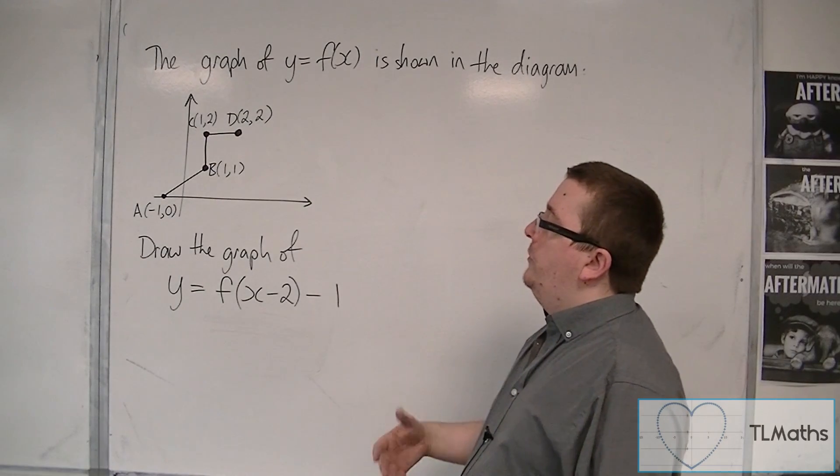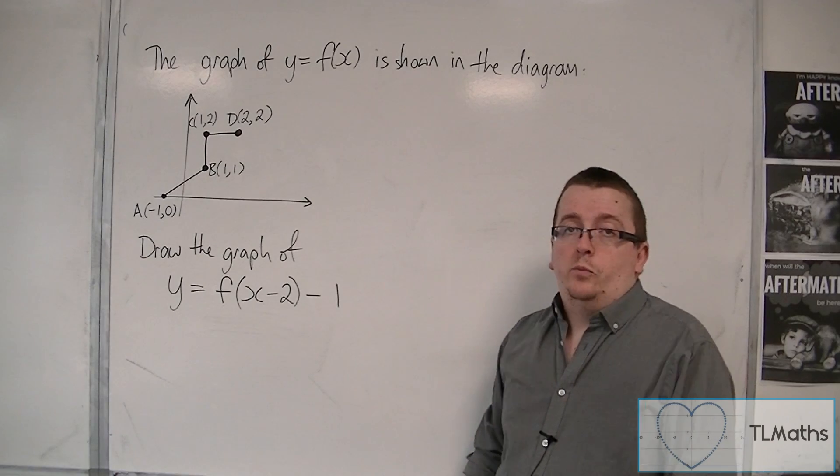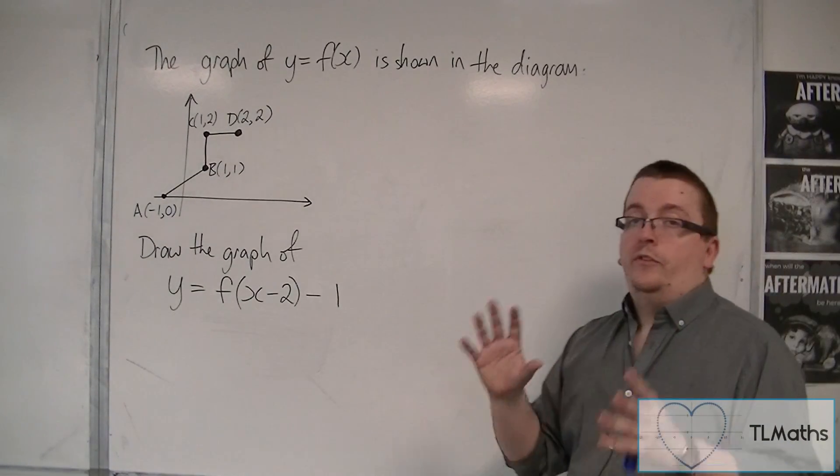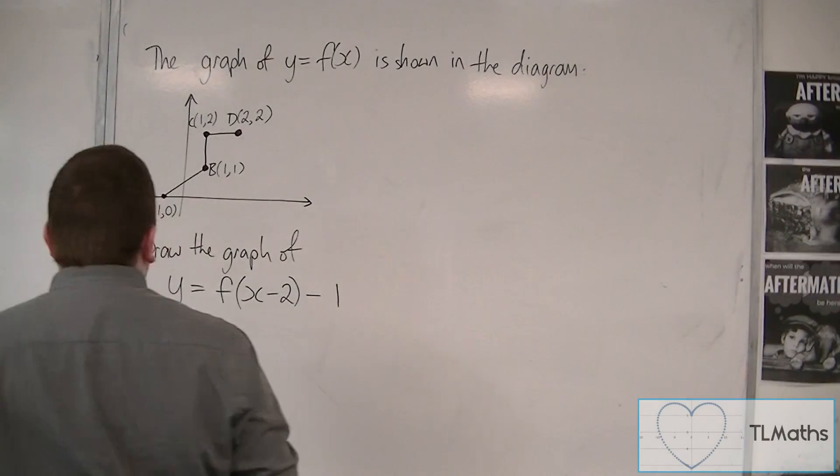And what we want to do is draw the graph of y is equal to f of x minus 2 minus 1. And we want to make sure that we're labelling the points correctly. OK, that is very important. We must make sure we label it.